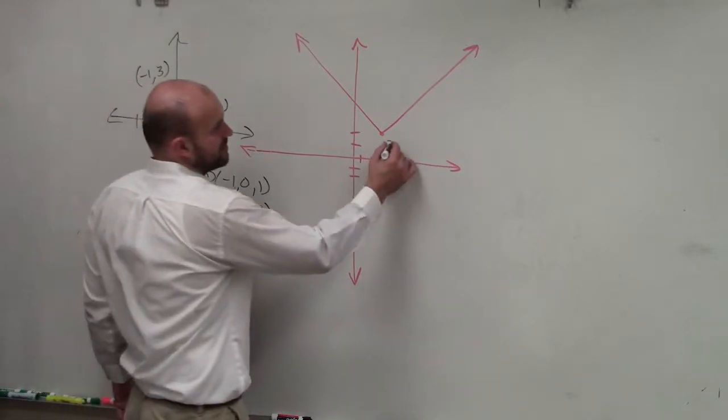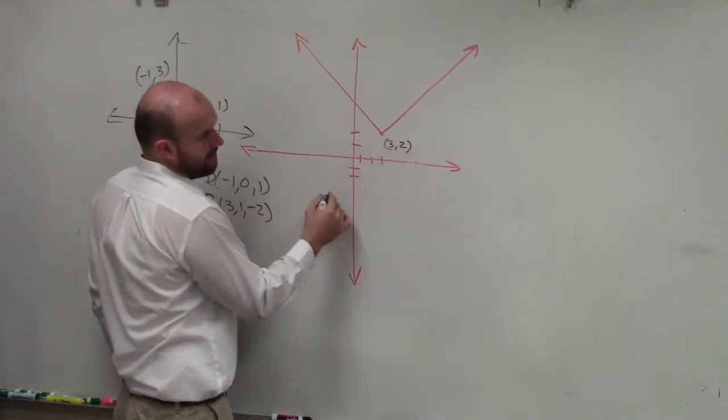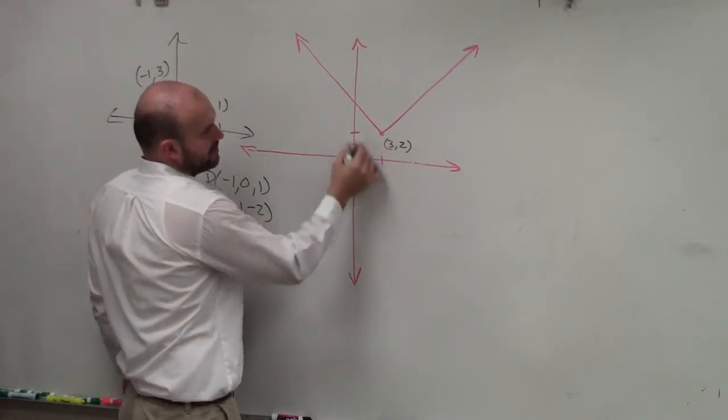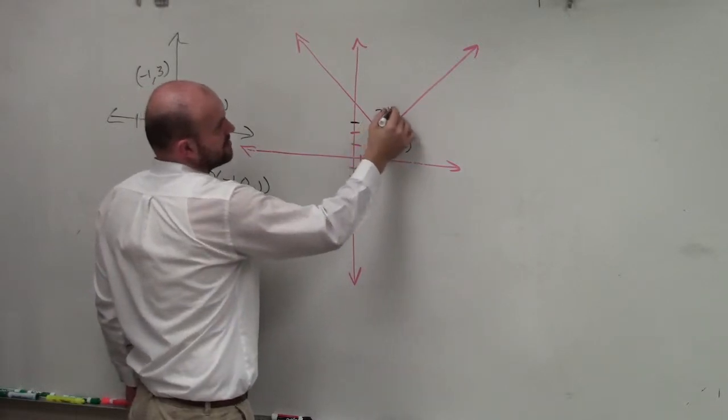Because yes, we know this point is 3, 2, right? And you could also say, let's say that's 2, 4. We also know 2, 4 is in the point, right?